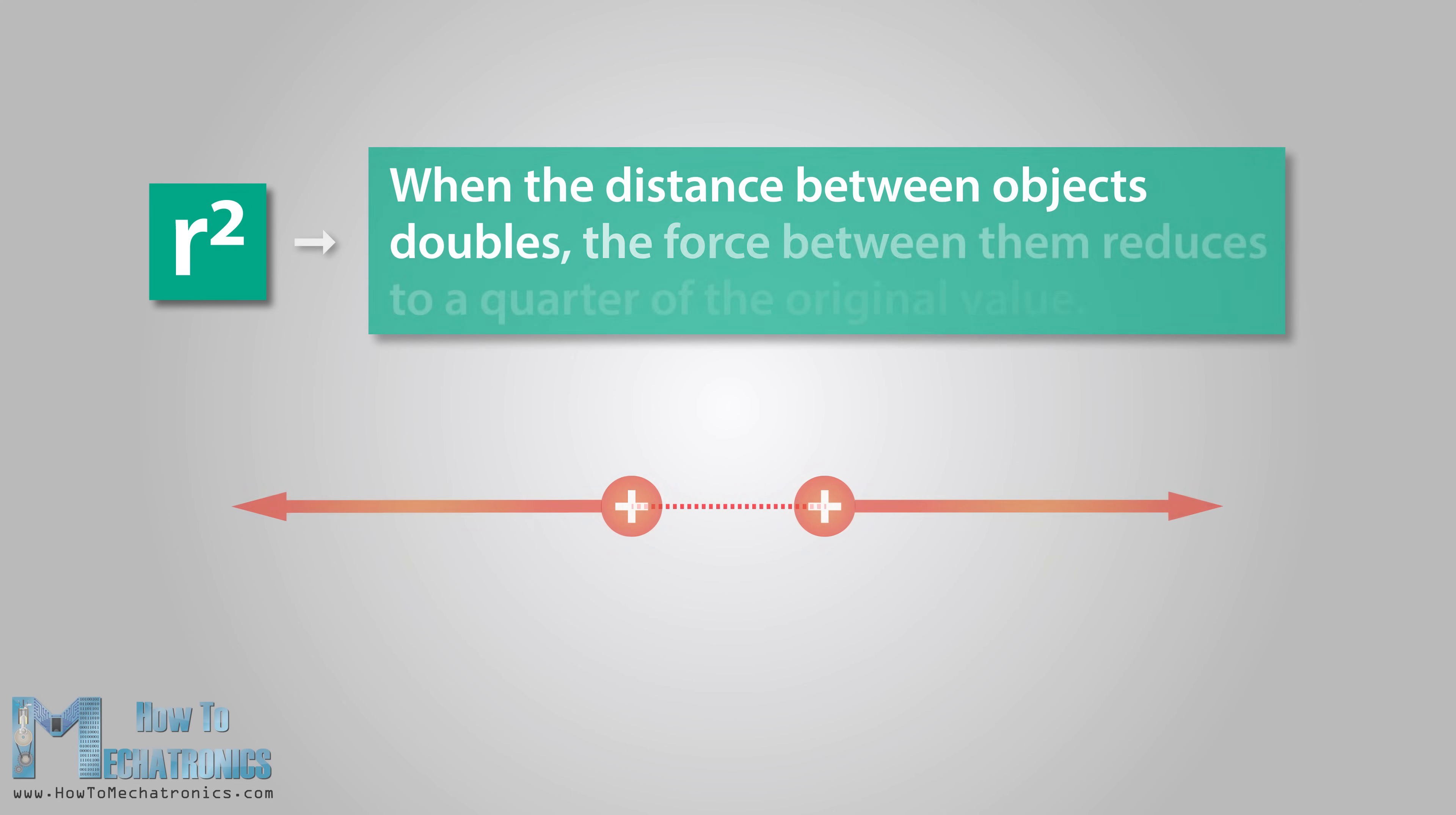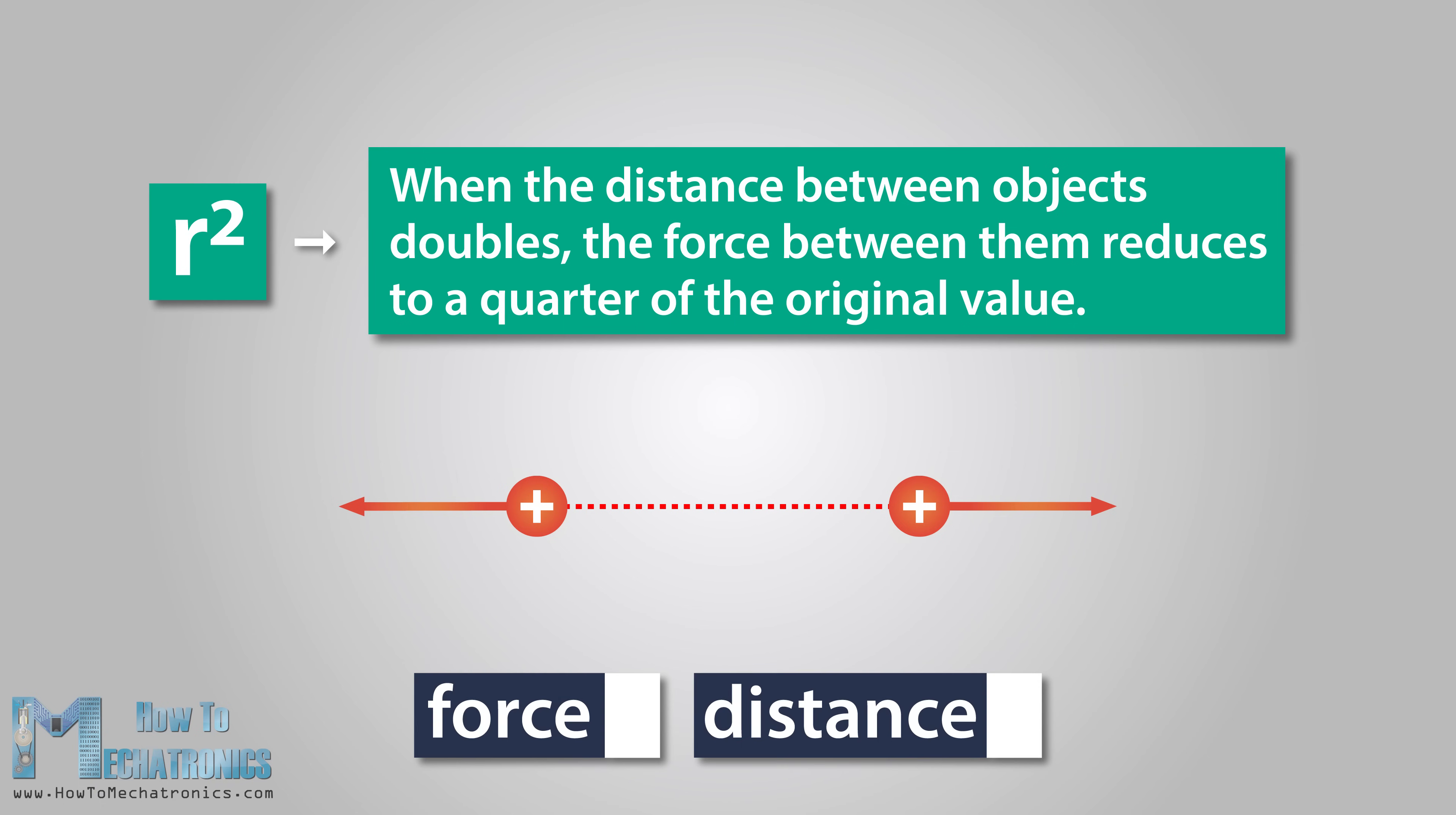The reason why the distance is squared is because when the distance between objects doubles, the force between them reduces to a quarter of their original value. In other words, the electric force between two objects increases as the distance between them decreases. And opposite, the force decreases as the distance increases.